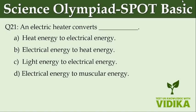An electric heater converts dash. Option A, heat energy to electrical energy. Option B, electrical energy to heat energy. Option C, light energy to electrical energy. Option D, electrical energy to muscular energy.